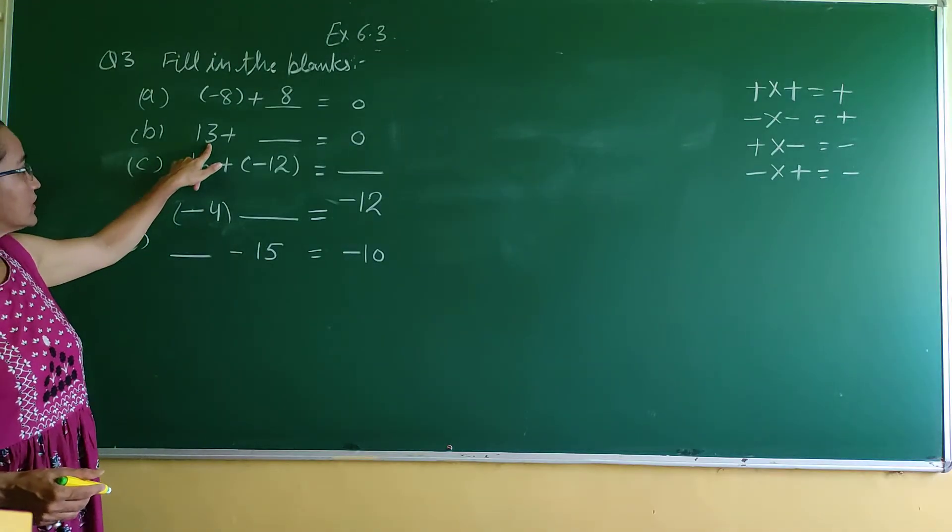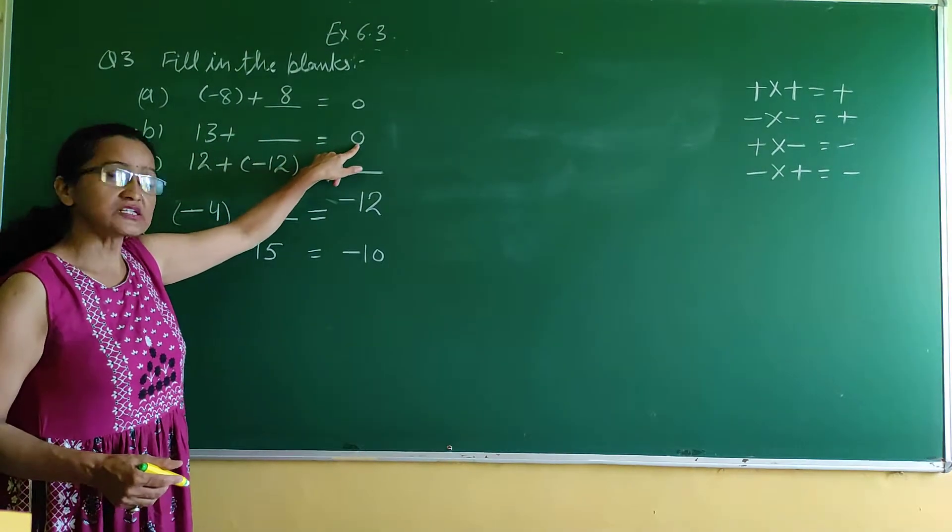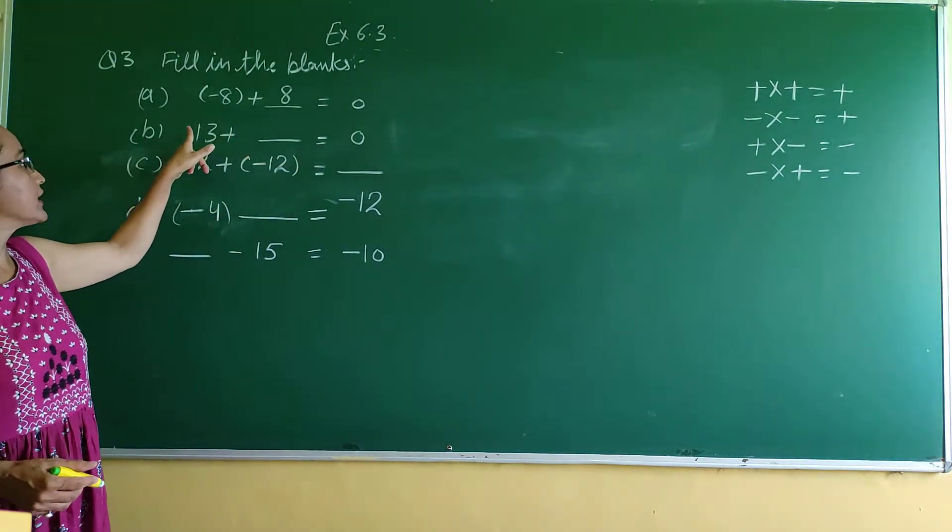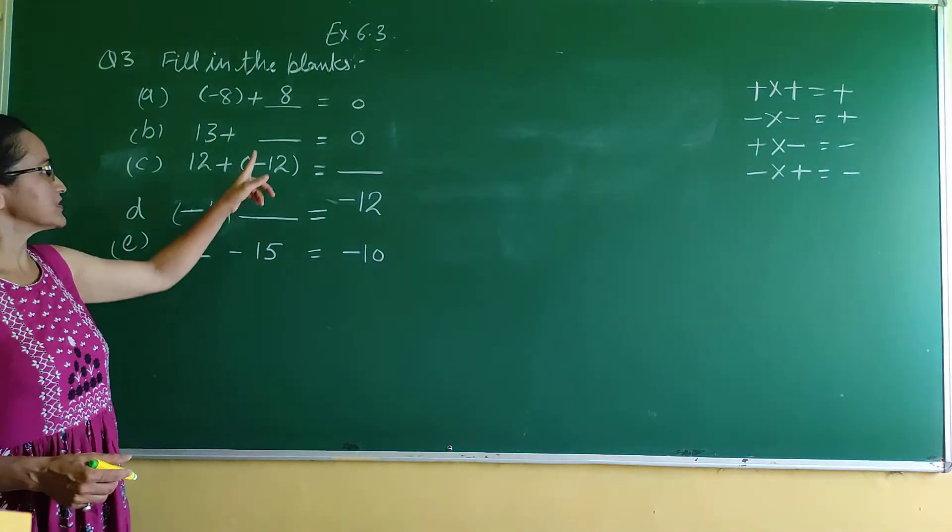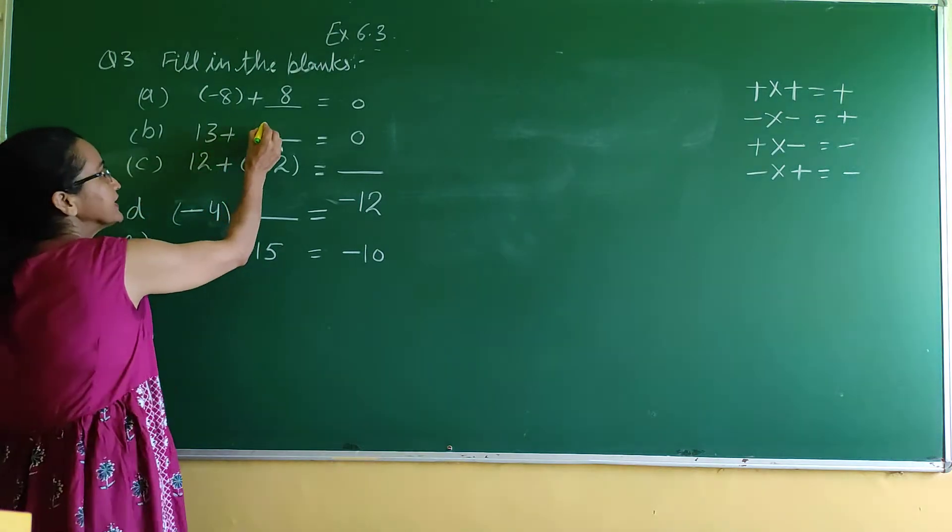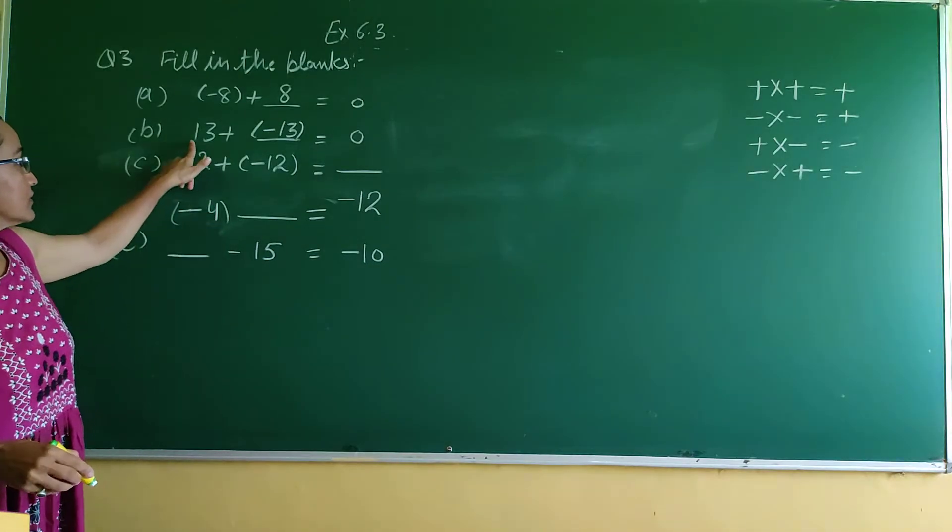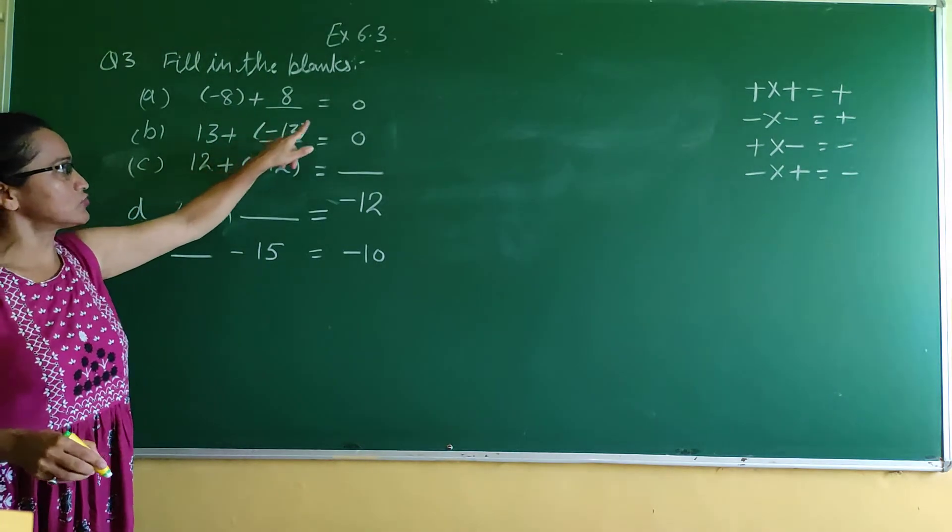Next is 13 plus blank equals 0. We have 13 plus and the answer is 0. What do we add to 13? We add -13. If we add -13 to 13, we get 0.